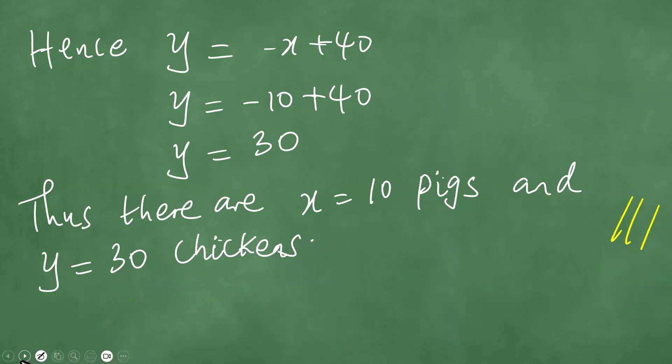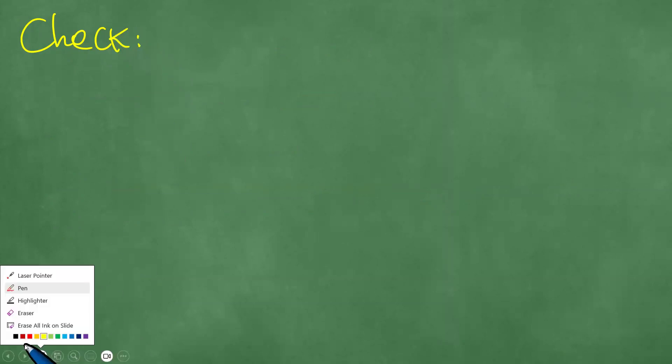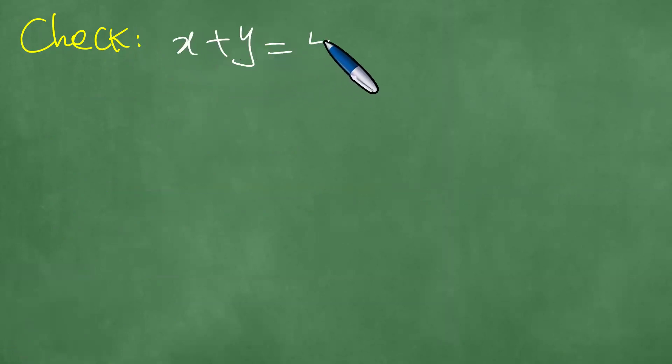So we check the solutions. We conduct a quick check of the solutions. To check the solutions, we know that X plus Y must be equal to 40. We got X to be 10 and Y was obtained as 30. And 10 plus 30 is 40. And this is correct. Eureka, we have got this here.